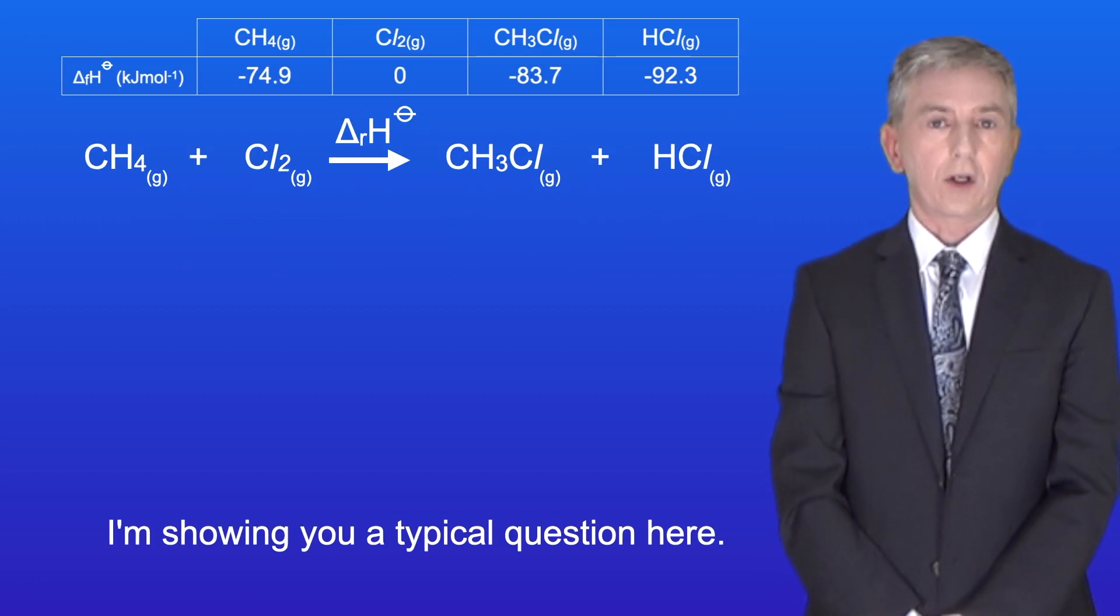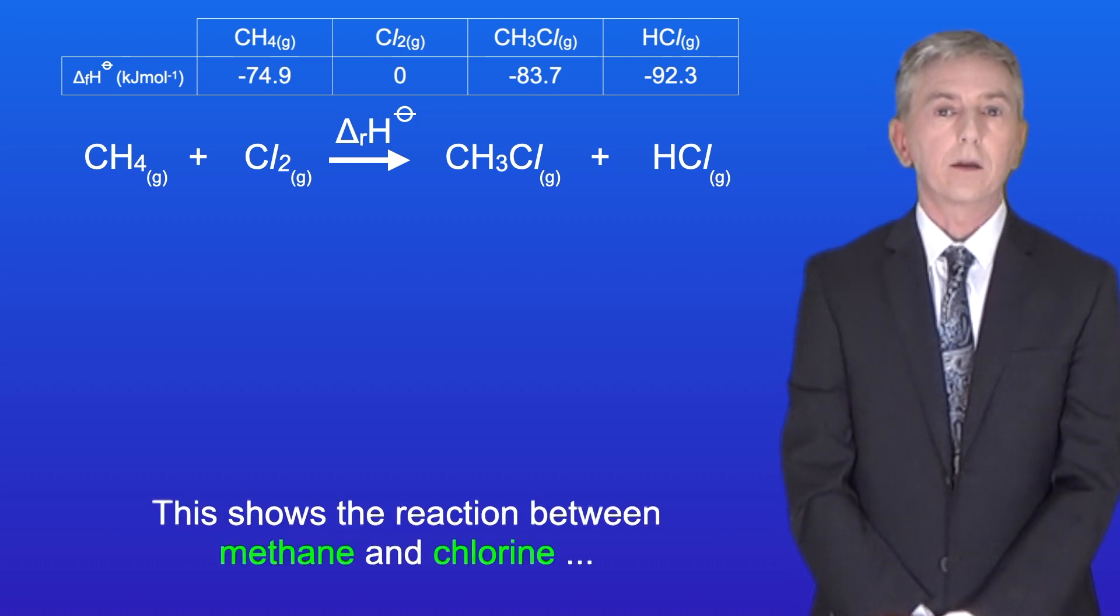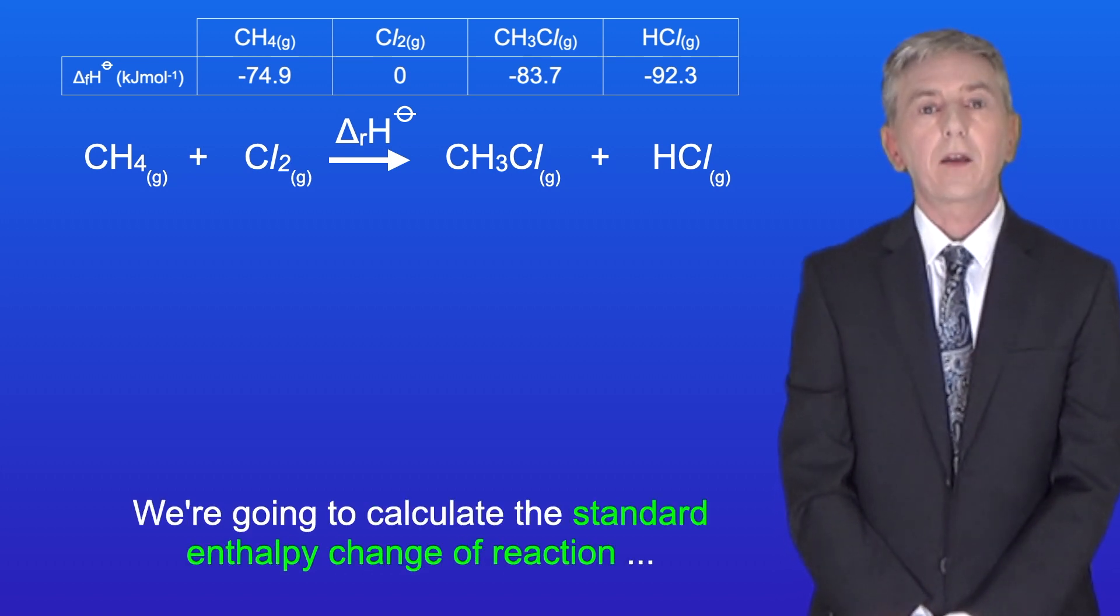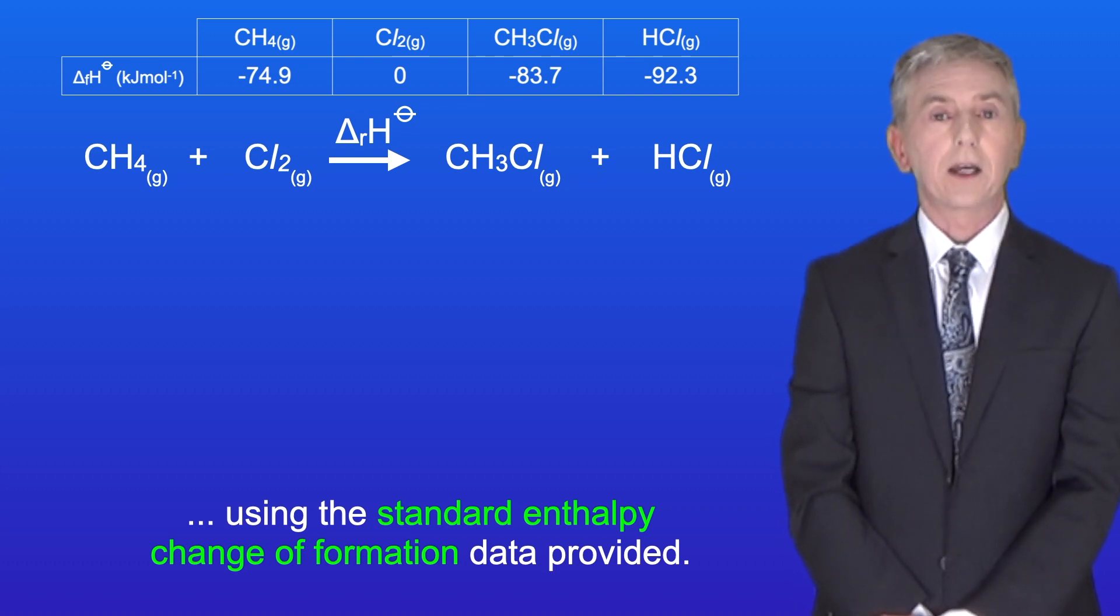I'm showing you a typical question here. This shows the reaction between methane and chlorine to make chloromethane and hydrogen chloride. We're going to calculate the standard enthalpy change of reaction using the standard enthalpy change of formation data provided.